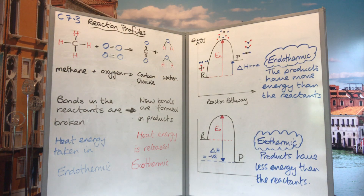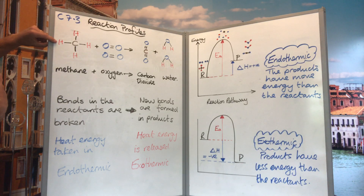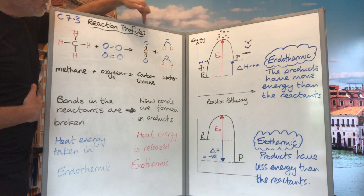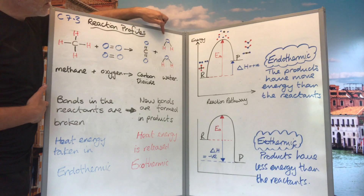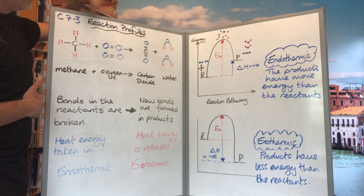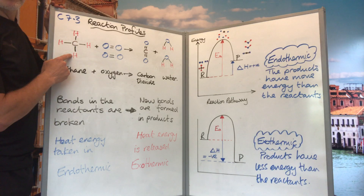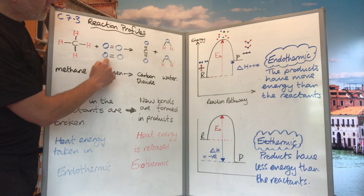C7.3 reaction profiles. Every reaction undergoes the same process of bond breaking and bond making. We've got an example here of methane reacting with oxygen to produce carbon dioxide and water. We show the molecules here — each methane molecule has one carbon bonded to four hydrogen atoms, and oxygen is bonded to another oxygen.